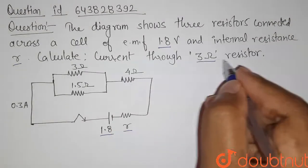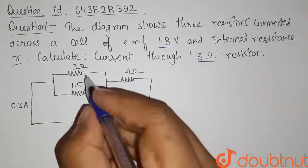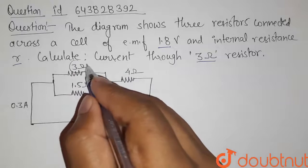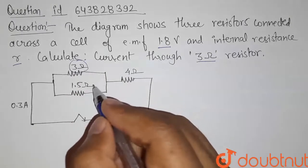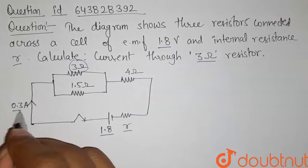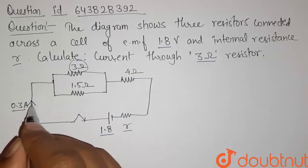Current through 3 ohm resistor is. So we have to find the current that is flowing through 3 ohm resistor. Here it is given that the current that is flowing in the circuit is 0.3 ampere.